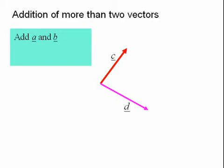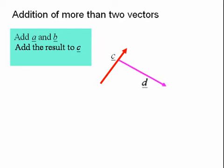Now we need to add C to D. This time we move D across so that its tail meets the head of C. The final or overall resultant vector is then R as shown.